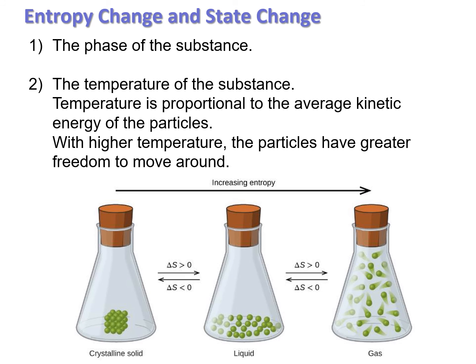The phase of the substance and the temperature determine the amount of entropy. Gases have the most entropy out of solids, liquids, and gases. Between liquid and solid, solid has lower entropy. Between liquid and gas, liquid has lower entropy.